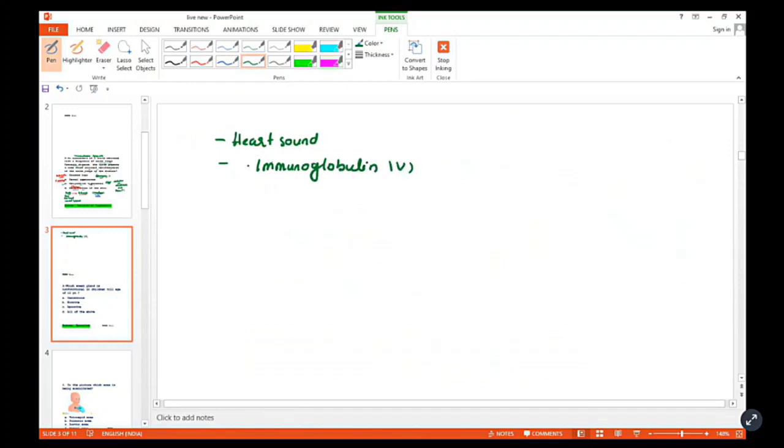Immunoglobulin IV - intravenous immunoglobulin is a blood product. When we administer intravenous immunoglobulin as a blood product, monitor the patient carefully.